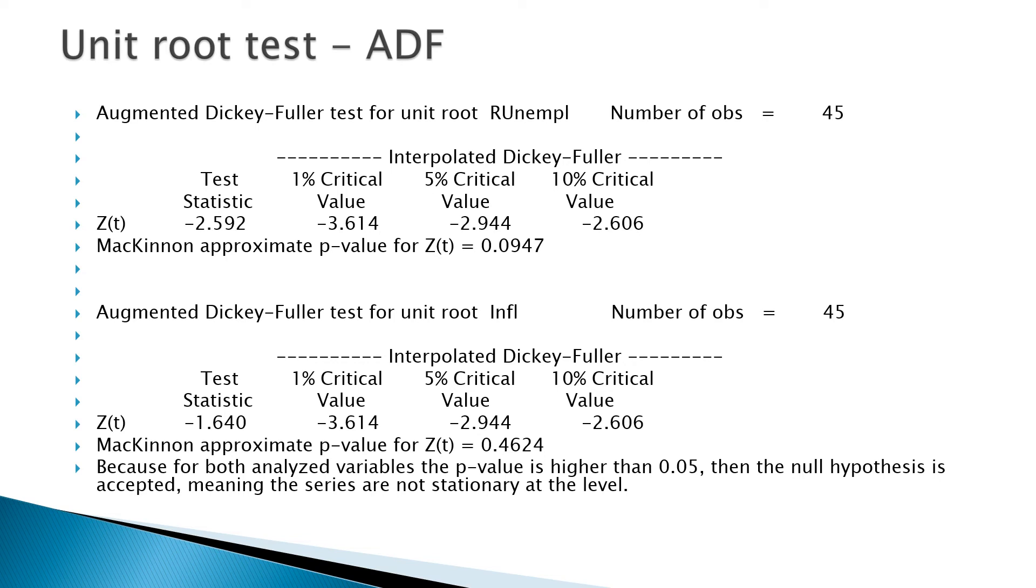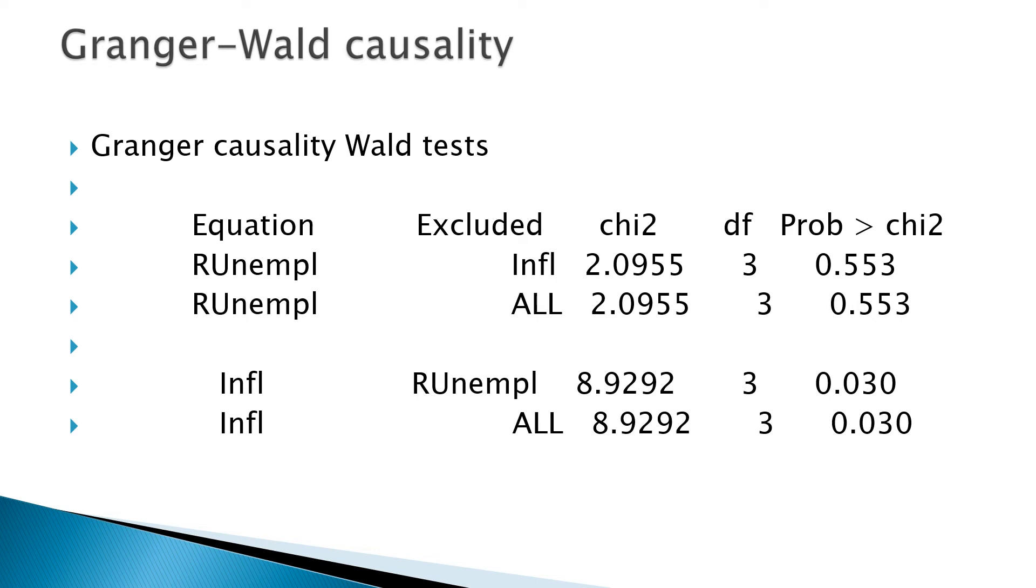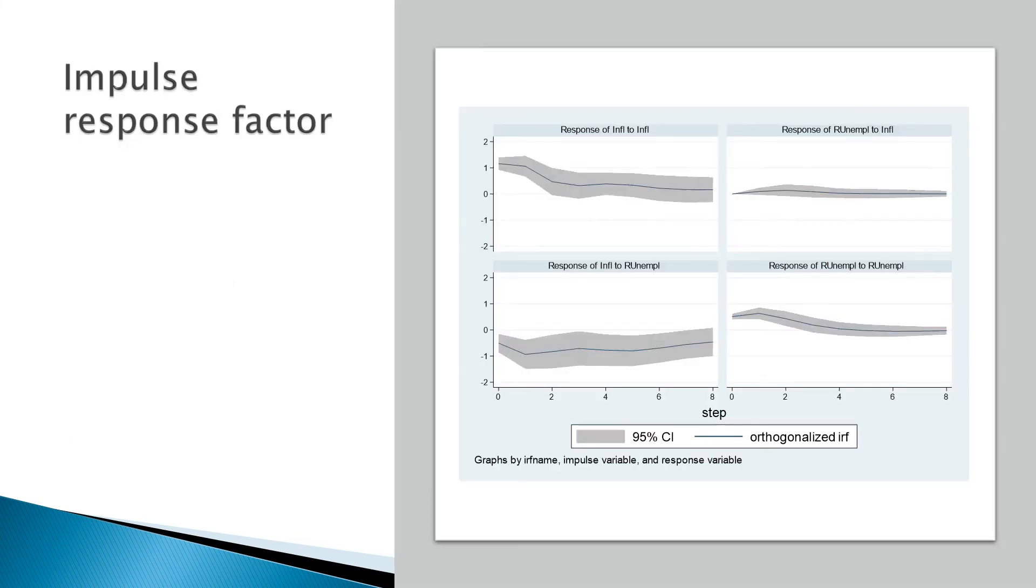To assess the level of stationarity, the augmented Dickey-Fuller test for unit root is applied, taking into account a default number of four lags. Since the series are stationary at level one, we will apply the causality test to show the short term link between the variables. To see the response of the variables to impulses, this model is constructed and the impulse graphs are generated.